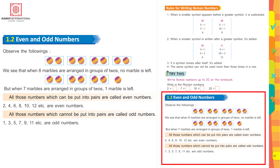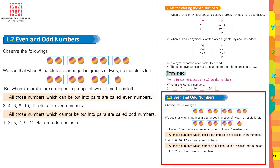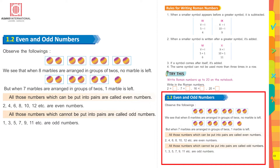Observe the following: there are 4 pairs of 2 balls each. We see that when 8 marbles are arranged in groups of 2, no marble is left. But when 7 marbles are arranged in groups of 2, one marble is left. All those numbers which can be put into pairs are called even numbers — for example, 2, 4, 6, 8, 10, 12. All those numbers which cannot be put into pairs are called odd numbers: 1, 3, 5, 7, 9, 11.